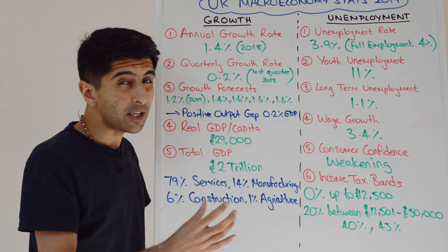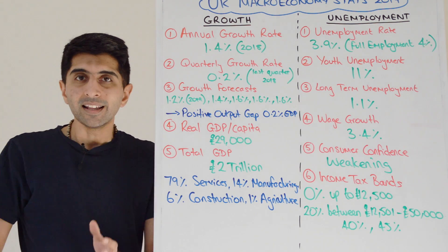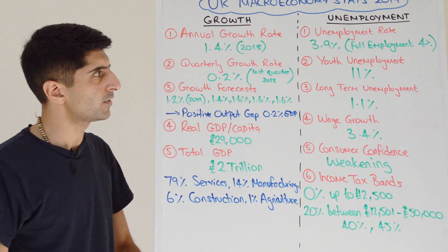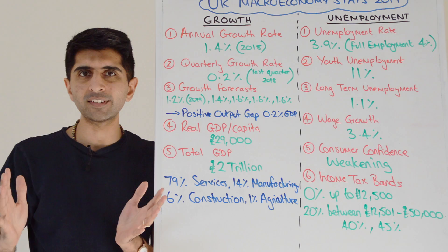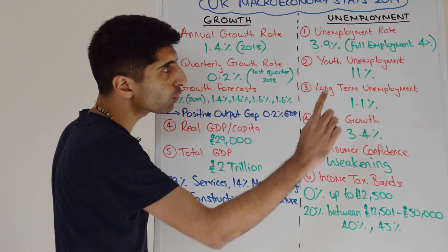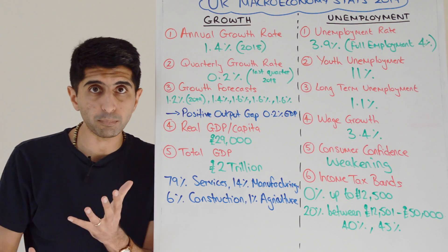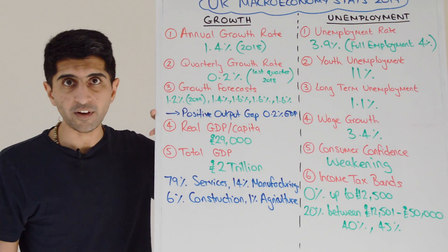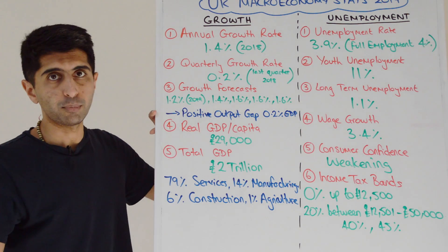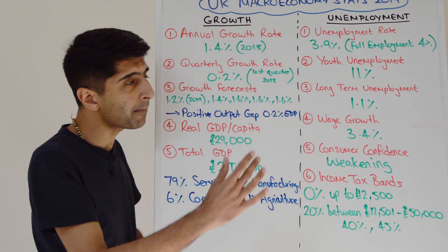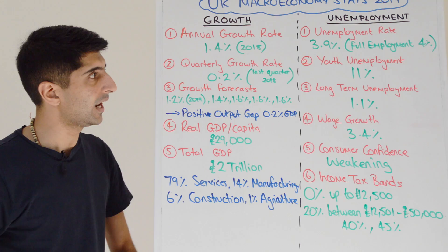The UK unemployment rate is 3.9% — record lows, the lowest rate since 1975. Employment rates are also at the highest since 1975. The OBR estimates the natural rate of unemployment is 4%, meaning full employment occurs at 4%; we are now below that. That matches their estimate of a positive output gap. The labour market is very tight — these are very good figures.